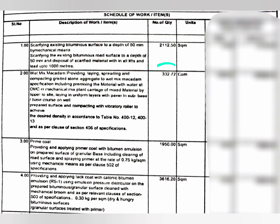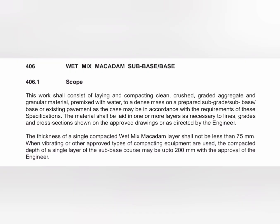The BOQ description for Wet Mix Macadam reads: providing, laying, spreading and compacting graded stone aggregate to WMM specification, including pre-mixing material with water at OMC in a mechanical mix plant, carriage of mixed material by tipper to site, laying in uniform layers with paver in sub-base/base course on a well-prepared surface, and compacting with vibratory roller to achieve desired density in accordance with Tables 412 and 413 as per Clause 406 of Section 400.